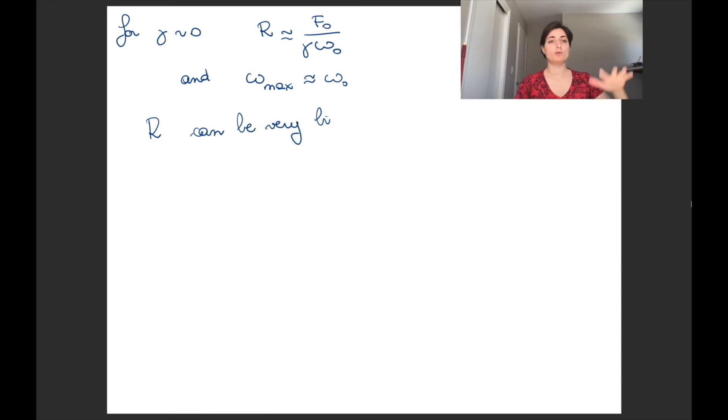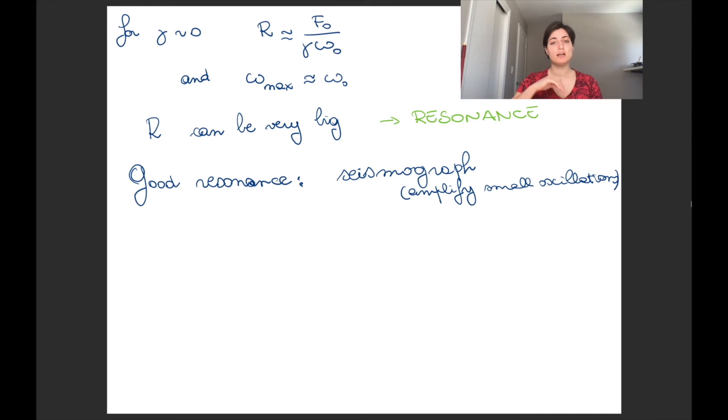Based on what we had before, for gamma almost equal to zero, R is almost equal to f_zero divided gamma omega_zero. And omega_max is roughly equal to omega_zero. But we just said that gamma can be very small and we are dividing by gamma. So in this case, we know that R can actually become very big. We call this resonance. The idea that you are giving a forcing, a periodic forcing to a system, and the reaction is actually bigger than the forcing that you gave it.